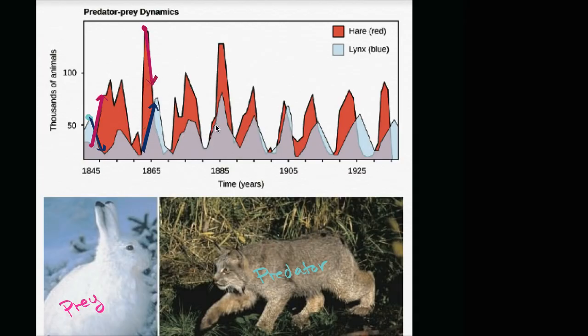So this is real data showing the snowshoe hare, the prey, and the Canadian lynx, the predator, over many, many decades to show this predator-prey cycle.